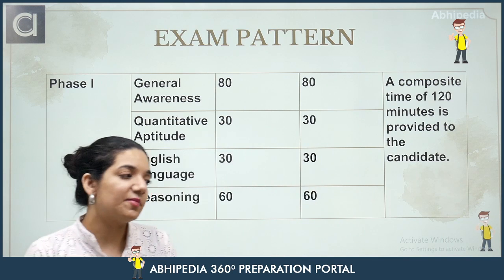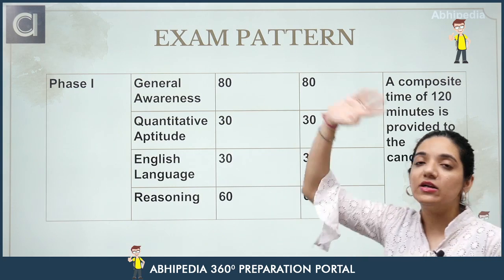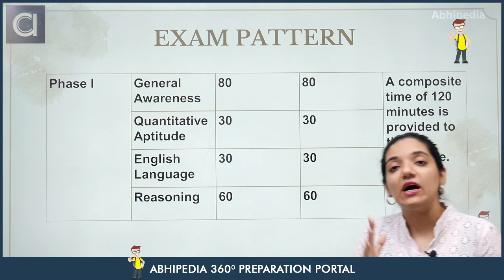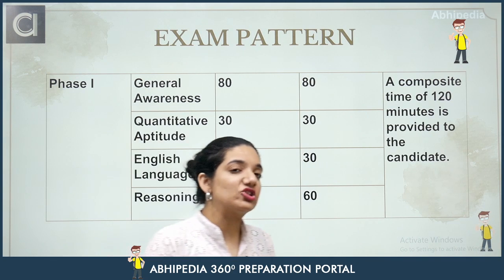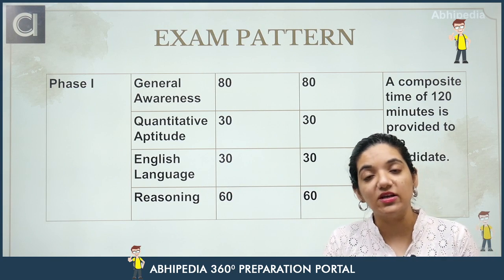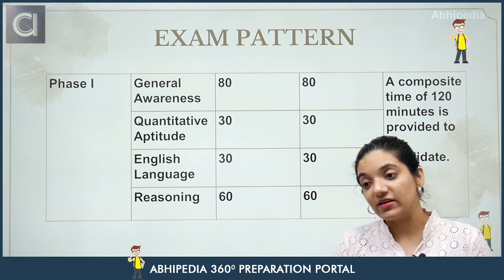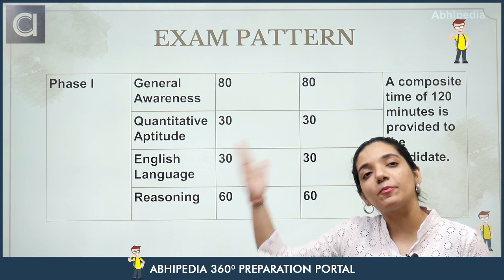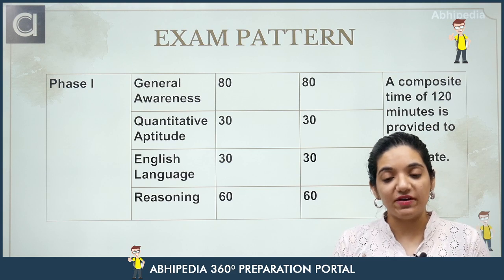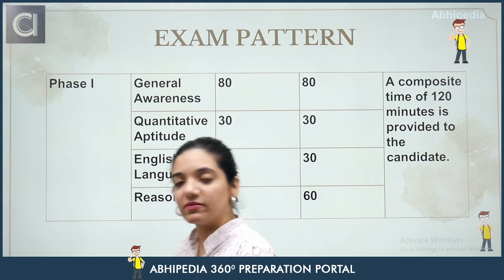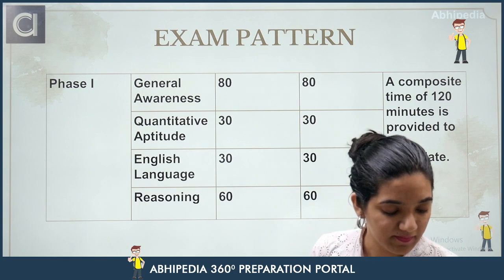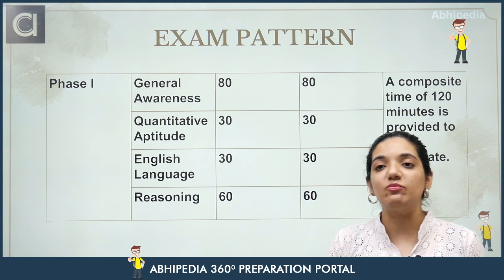If I were to call a hero or winner of this paper, it would be General Awareness — with 80 marks in the examination. Reasoning is also significant at 60 marks. English and Quant also require proper preparation because English had moderate to difficult questions last time. Overall, Phase 1 was tougher than before. RBI has clearly stated that they will set high-level questions, so preparation becomes very important.